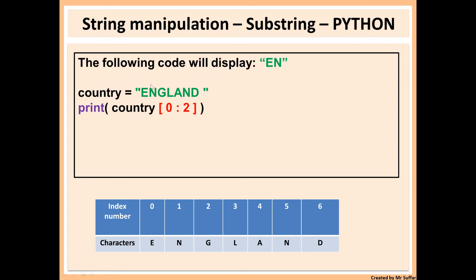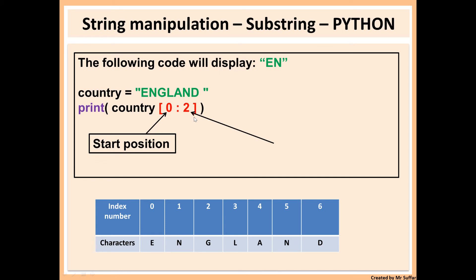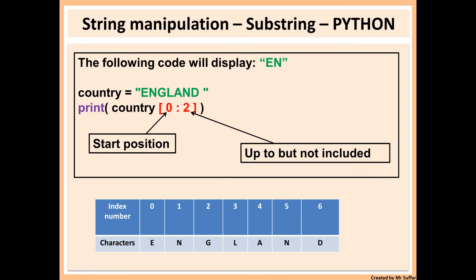You can extract more than one letter by using a colon in the middle in Python. First you state the starting position — zero is the start position — and then the end number, but not including that number. So country[0:2] covers indexes zero and one but not two, which gives us 'en.' That's how substring slicing works in Python.